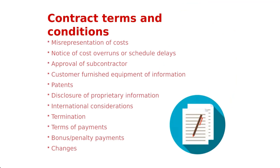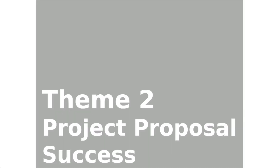Finally, there are the terms and conditions, which are quite important. These include misrepresentation of cost, notice of cost overruns, approval of subcontractors, disclosure of proprietary information, terms of payments, bonuses, and penalties. It is important that these are discussed and that every single stakeholder fully understands the terms and conditions of the contract. This wraps up the first part of this chapter, and the next part will discuss project proposal success.